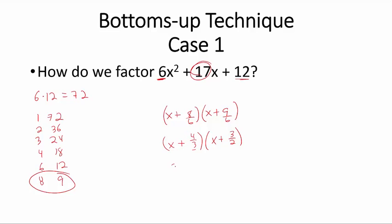Let us multiply the first binomial by 3: 3x plus 4, and let us multiply the second binomial by 2: 2x plus 3. Now, we claim that this is the factorization of this trinomial.